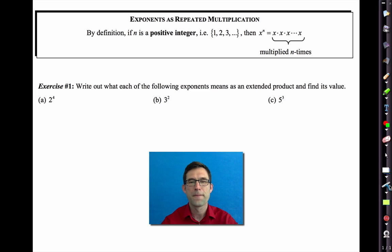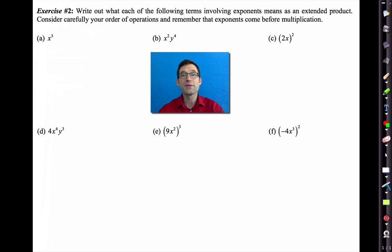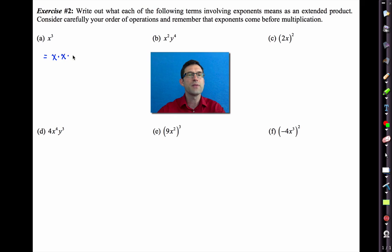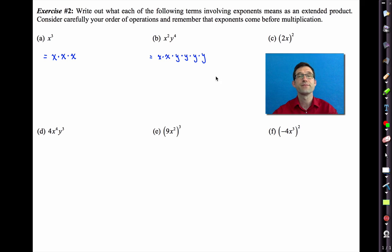Exercise two: write out what each of the following terms involving exponents means as an extended product. Consider carefully your order of operations, and remember that exponents come before multiplication. Notice this didn't say we had to evaluate — we just want to make sure we understand what this means. So for instance, x to the third, also known as x cubed, is simply x times x times x. Likewise, x squared times y to the fourth really just means x times x times y times y times y times y.